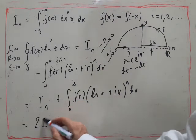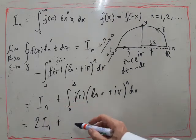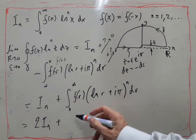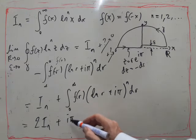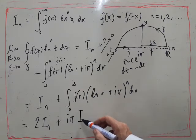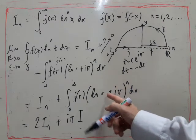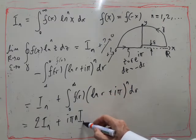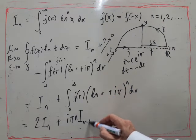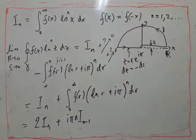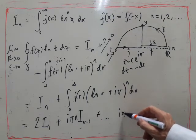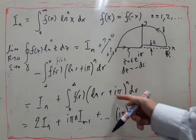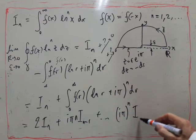So I'll actually get 2 times I_n plus the next term would be i pi times, using binomial theorem, times n times I_(n-1), and so on, down to (i pi)^n, and you've got I_0.